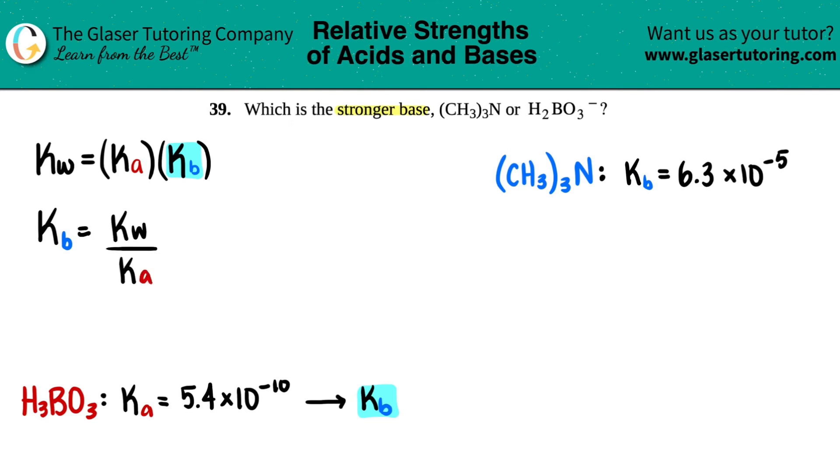Keep in mind that this formula - the Ka and Kb have to be conjugates of each other. You can't be plugging in a random Ka value and then try to get a Kb of another compound. They have to be conjugates.